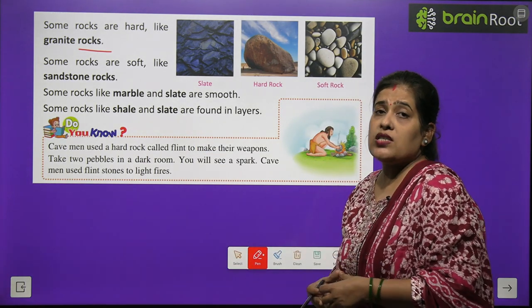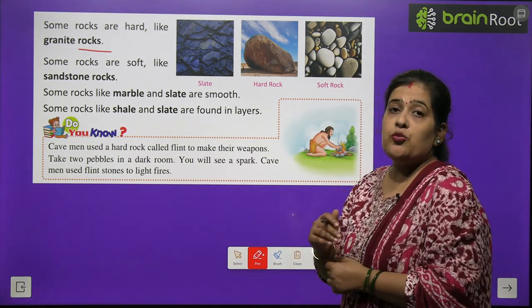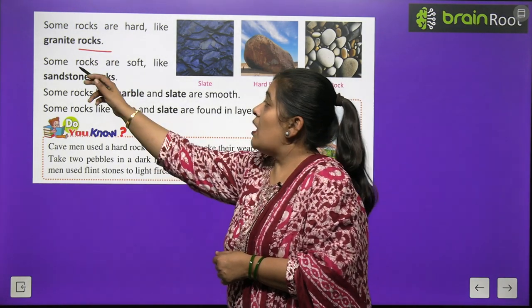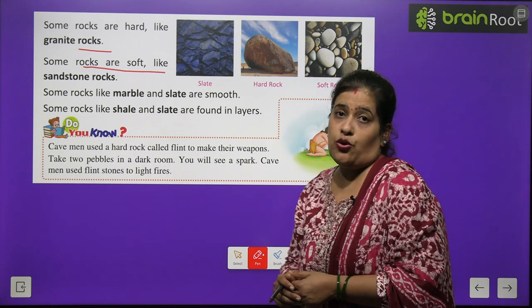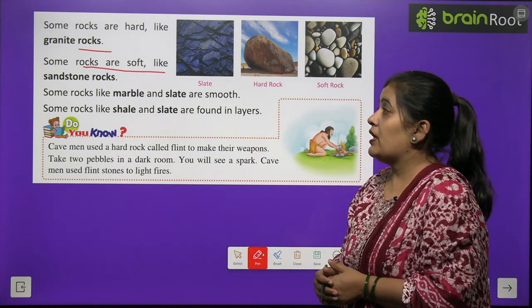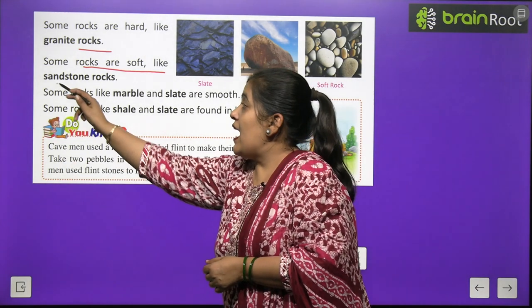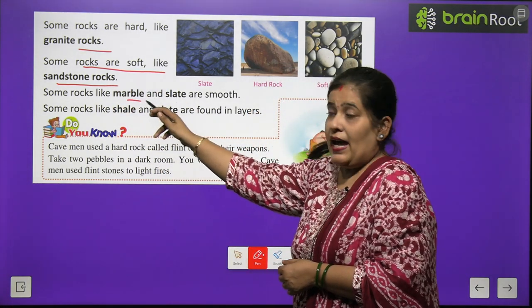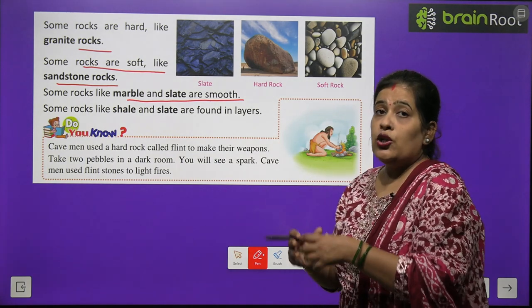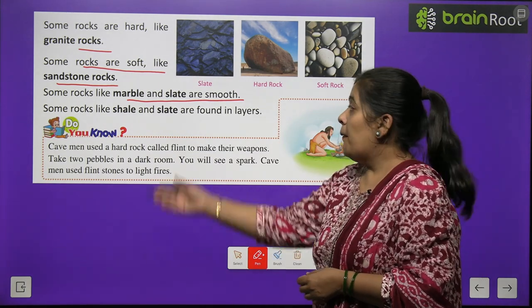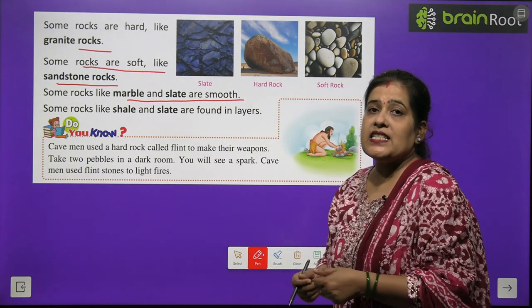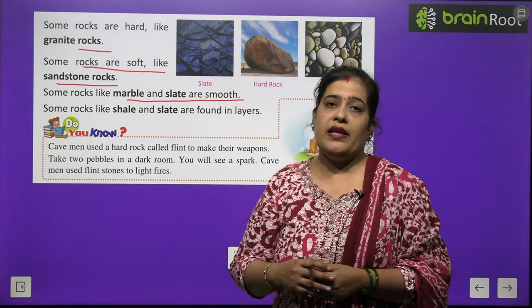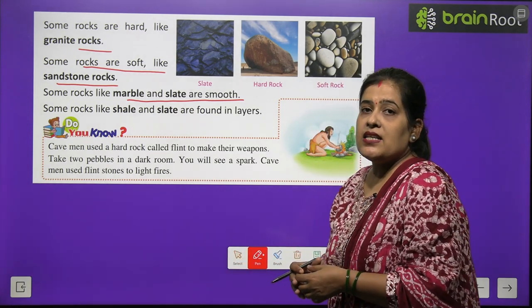Rocks are of many kinds. Some rocks are soft, like sandstone. Some rocks, like marble and slate, are smooth. Some rocks like marble and slate are hard. They are very smooth and shining. Marble is a rock that is very smooth.